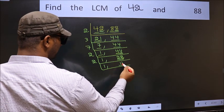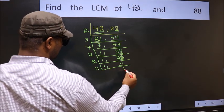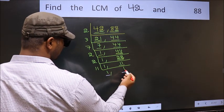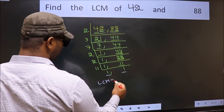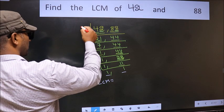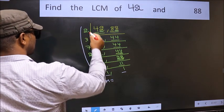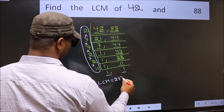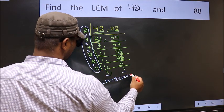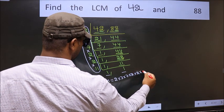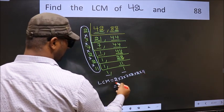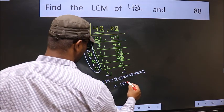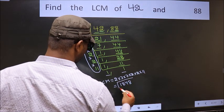Now here we have 11. 11 is a prime number, so 11 once is 11. We got 1 in both places. So our LCM is the product of these numbers — that is 2 times 3 times 7 times 2 times 2 times 11. When we multiply these numbers, we get 1848 as our LCM.